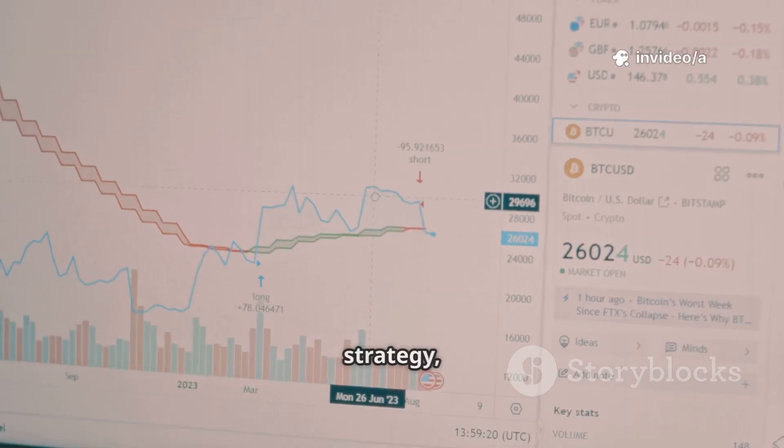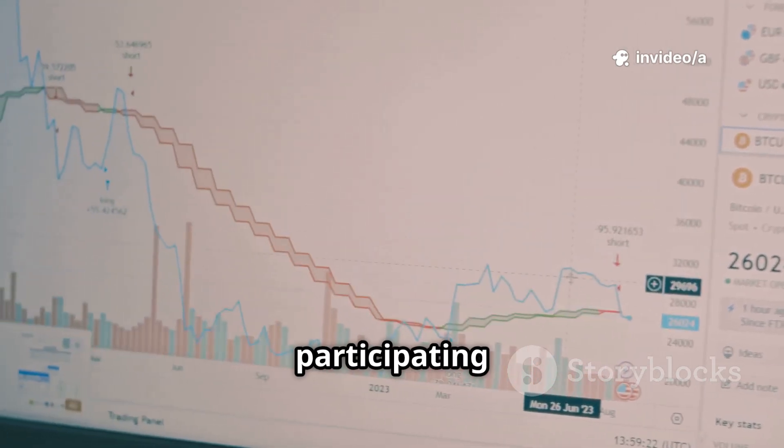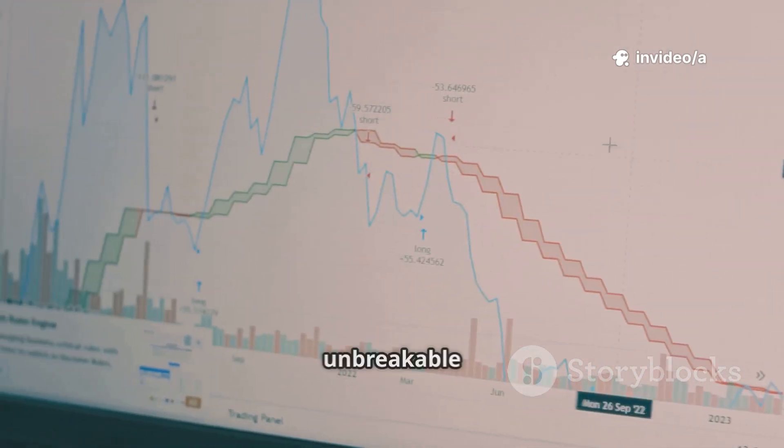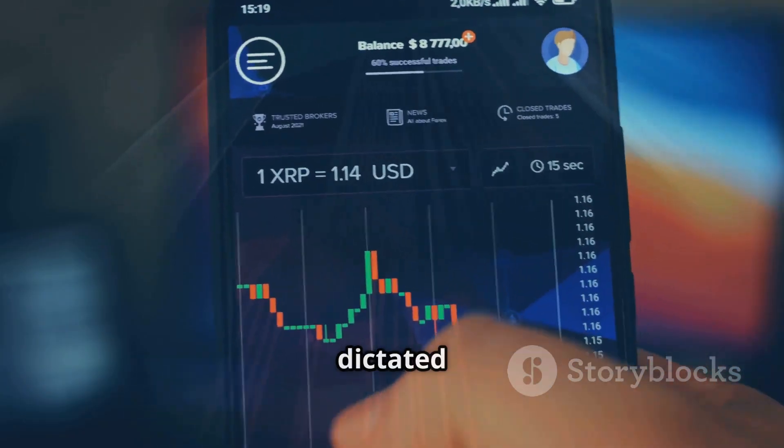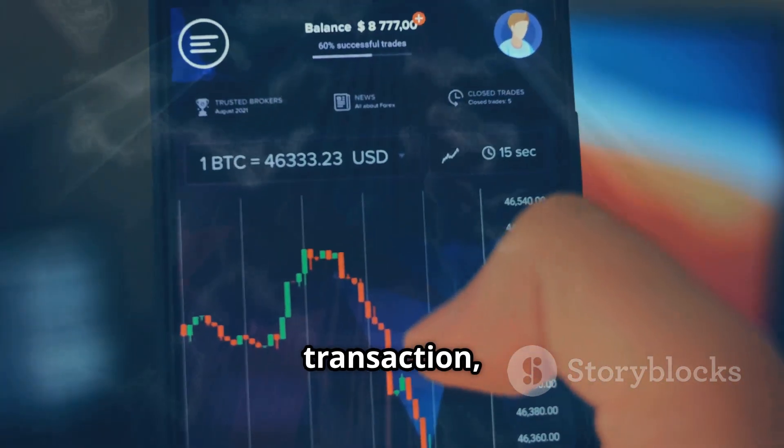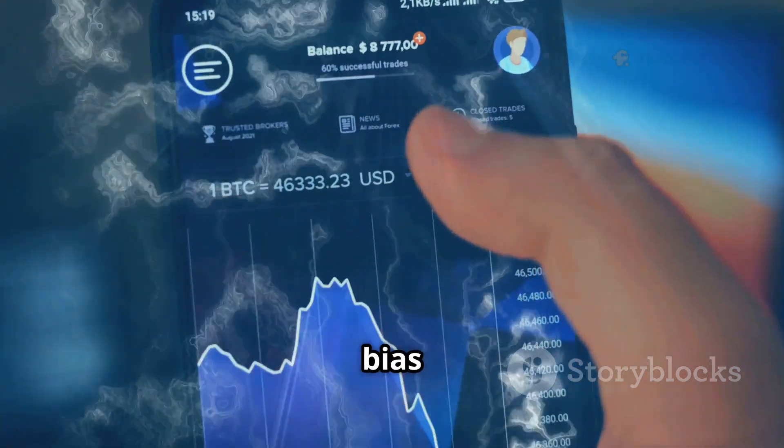Every holder, regardless of strategy, found themselves participating in a market governed by unbreakable law. The XRP constant dictated the value of every transaction, rendering human bias irrelevant.